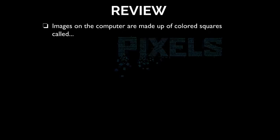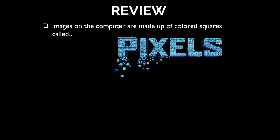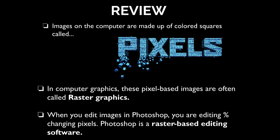It's important to remember that images on a computer are all made up of colored squares called pixels. In computer graphics, these pixel-based images are often called raster graphics, as we have come to learn. When you are editing images in Photoshop or Photopea.com, you're editing the percent change in pixels. Photoshop is a raster-based editing software that is dealing with pixels.